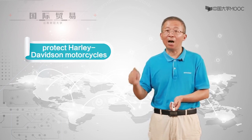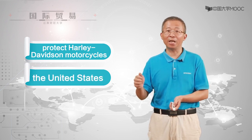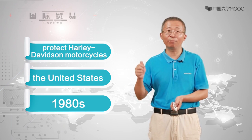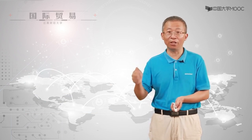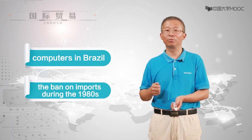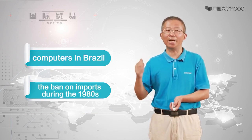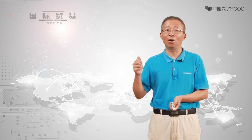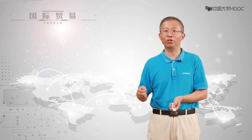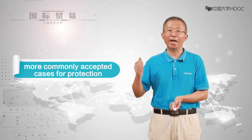In practice, there are many examples of infant industry protection. The tariff given to protect the Harley-Davidson motorcycle in the United States during the 1980s appears to have been successful, because Harley-Davidson survived and has become very profitable. By contrast, the ban on computer imports in Brazil during the 1980s was not successful, because the industry was never able to learn enough from world leaders to reach the same level of efficiency and competitive prices. But anyway, infant industry protection is one of the more commonly accepted cases for protection.